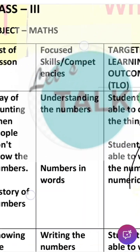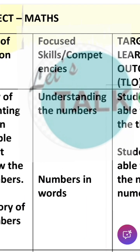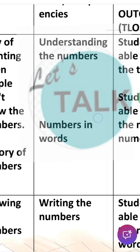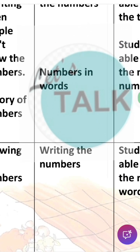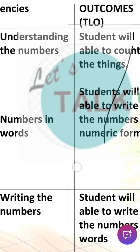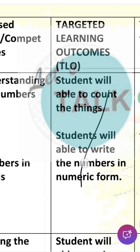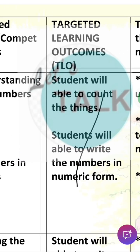Next is focused skill competencies. For focused skill Maths: understanding the numbers, numbers in words, and writing the numbers. So in this chapter we have covered these things for children.